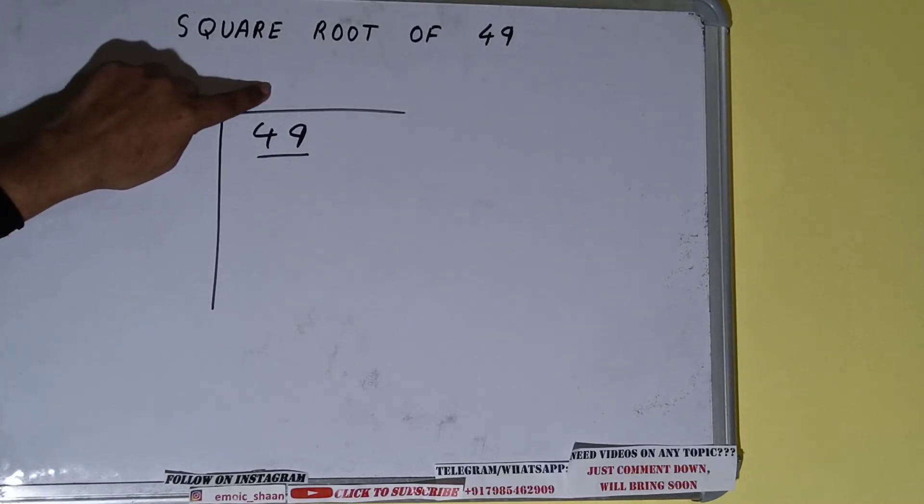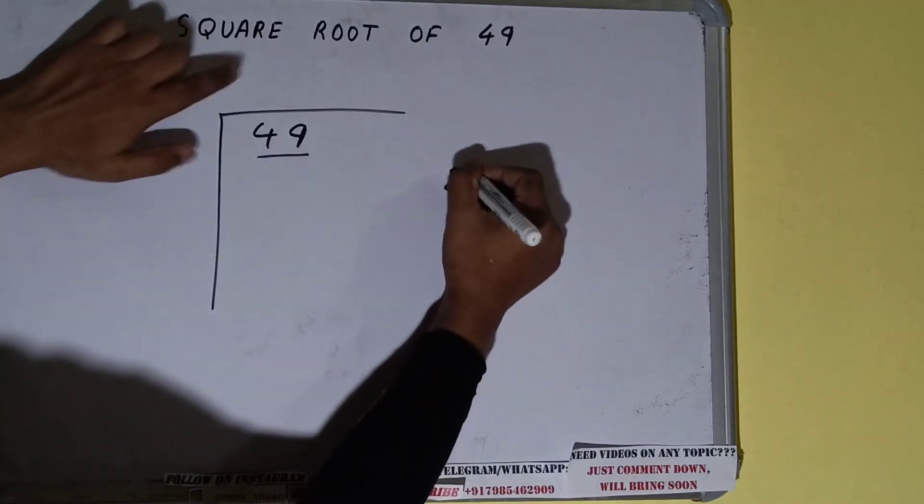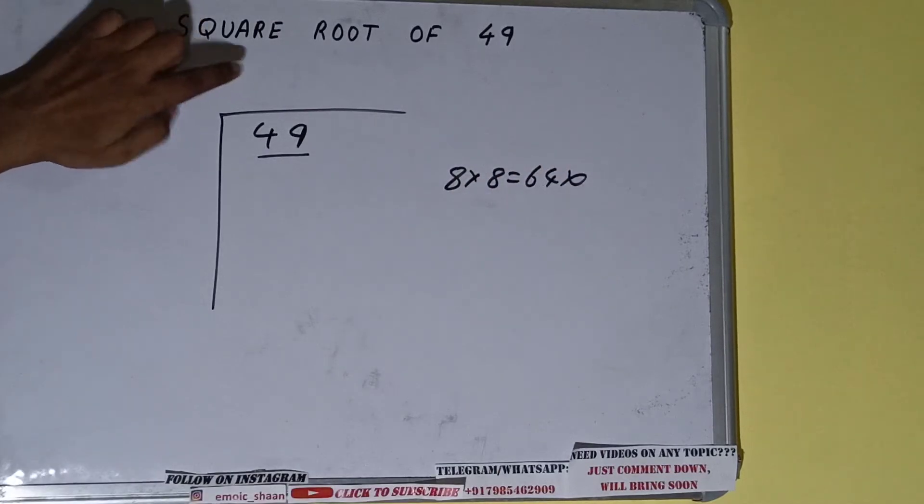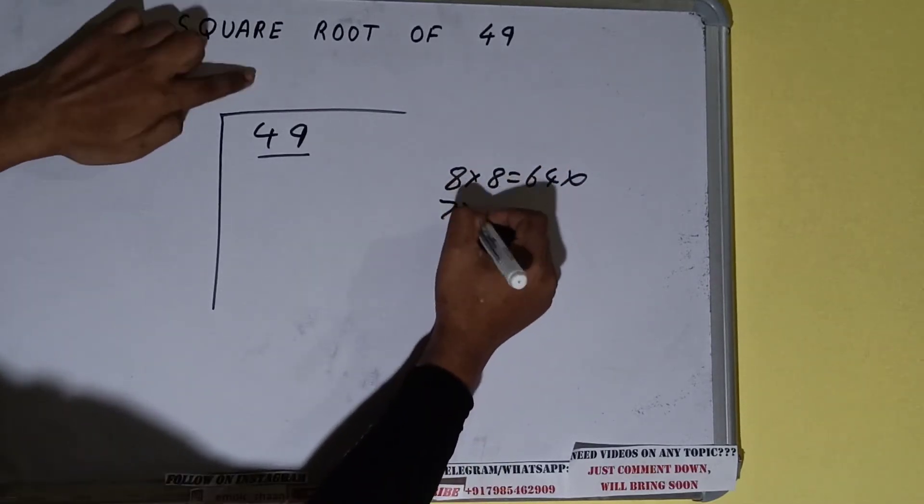The rule is whatever number we write here we have to write here also. So if we write 8 here and 8 here, we'll get 64 which is greater than 49, so we cannot use it. If we write 7 here and 7 here, we'll get 49 which is good to use.